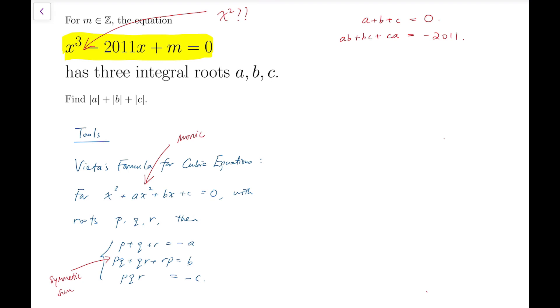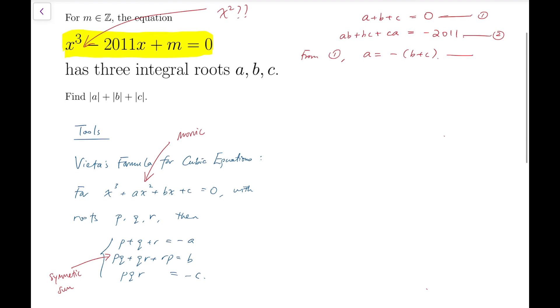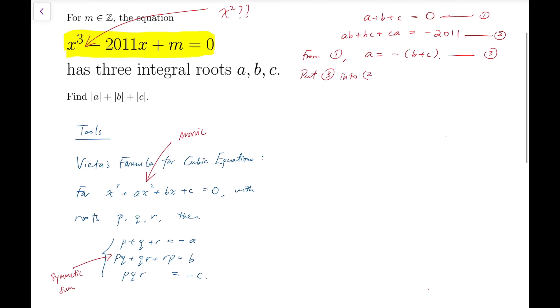And because the product of roots is minus m, and we do not know the value of m, so we disregard that for the time being. Now that is all we have, so we try to use a substitution of one equation into another. So I label them first. Then I'm going to rewrite the first equation by saying that a is minus of b plus c, and then I'm going to put this into the second equation. So I group the a terms, so that is a times b plus c, and now a is minus of b plus c, so I have this.